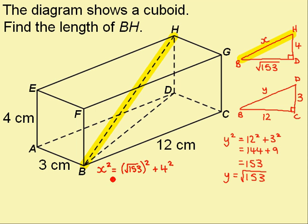So this is 153, and this is 16. Adding them together gives me 169. I can now square root this to find x, and that's 13. So the length BH that I was looking for is 13cm.